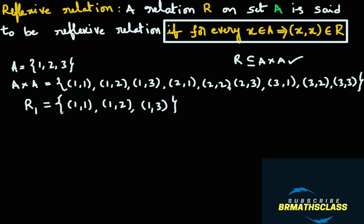Now we need to check: is this relation a reflexive relation? For every x belonging to set A, the ordered pair (x, x) must also belong to R. You take the element 1 in set A — is ordered pair (1,1) there in this relation? Yes, it is there. But from this alone, we cannot conclude that R1 is a reflexive relation.